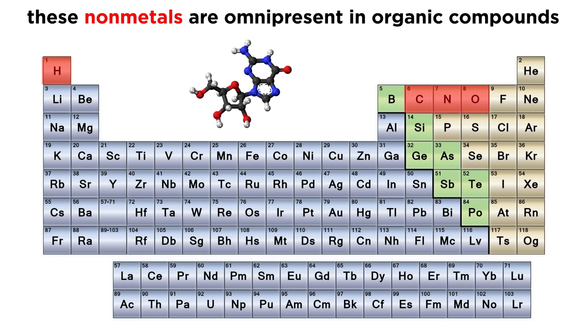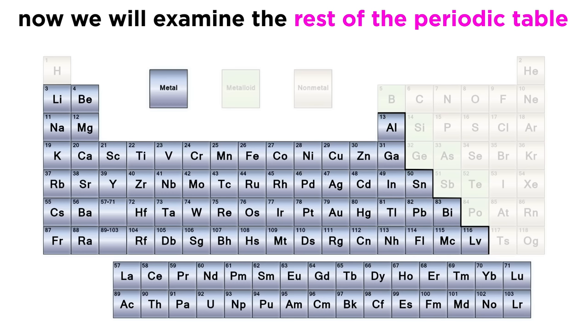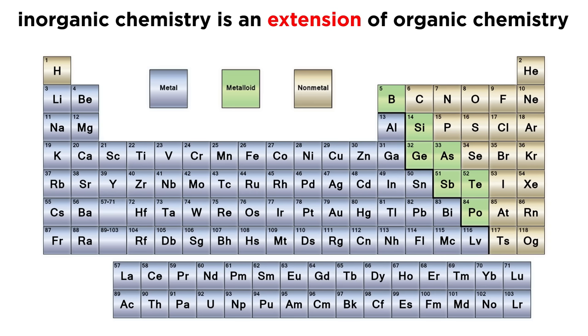But with inorganic chemistry, we suddenly open up the rest of the periodic table, from other nonmetals, to the metalloids, to all the varieties of metals, which make up the majority of the table. So, in a sense, inorganic chemistry is not really the opposite of organic chemistry, but rather an extension. We are beginning to leave this safe little corner of the periodic table, and learn about all of these other elements that we had more or less avoided during organic chemistry.